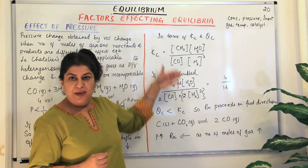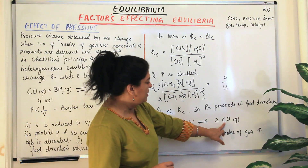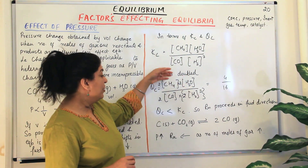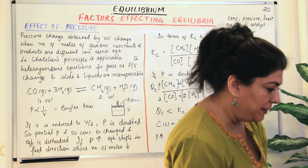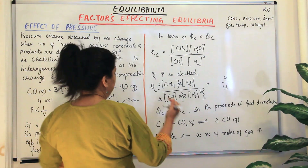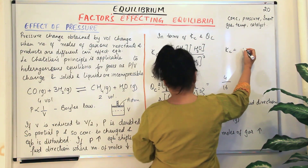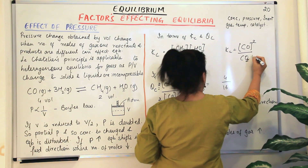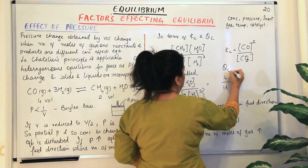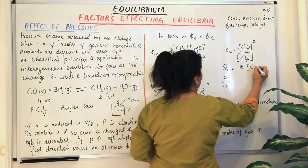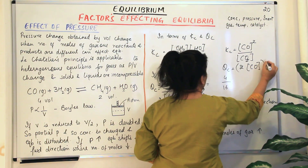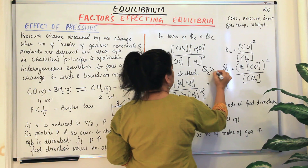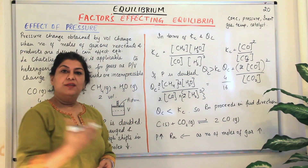You can again verify this with the QC and KC concept. KC equals CO² divided by CO₂. When volume is reduced to half, QC would be 2·CO all squared divided by CO₂, making QC greater than KC. Therefore the reaction proceeds in the backward direction.